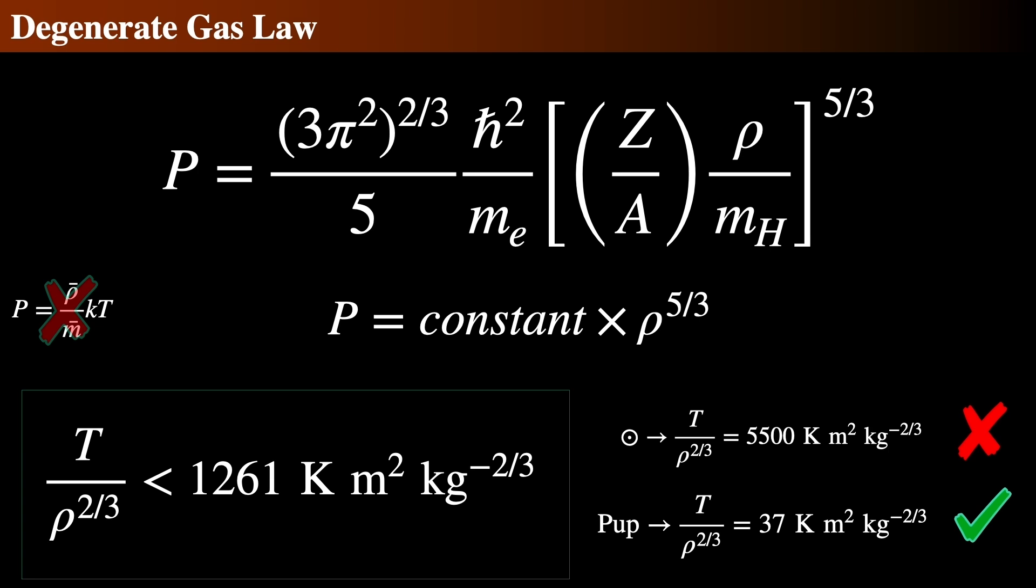First, the only two macroscopic variables are the pressure, on the left, and the mass density, on the right, to the five-thirds power. All the rest are numbers and constants. M sub E is the mass of an electron. M sub H is the mass of a hydrogen atom. Z over A represents the ratio of the atomic number Z to the atomic mass number A of the nuclei in the gas.